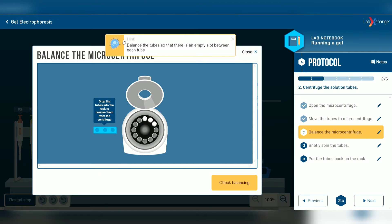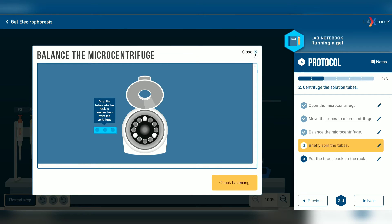Before starting the microcentrifuge, we have to balance the tubes in the microcentrifuge. Now check the balance. We check the balance to prevent the microcentrifuge from damaging when it rotates.